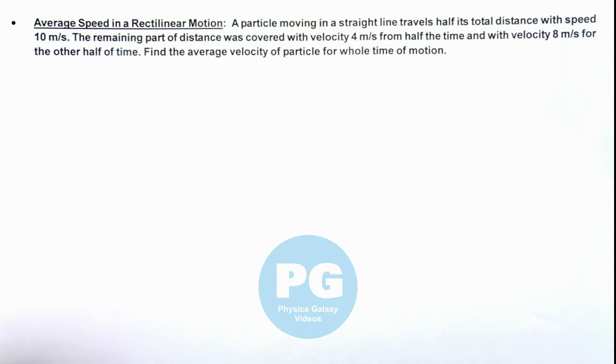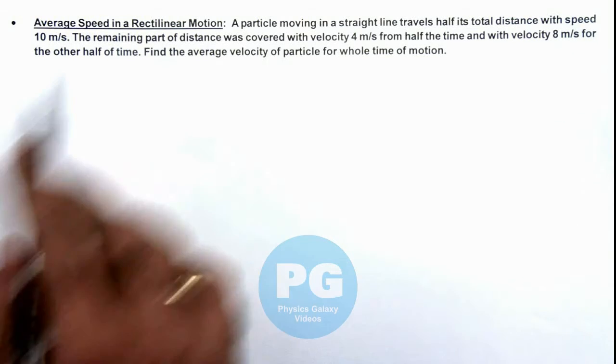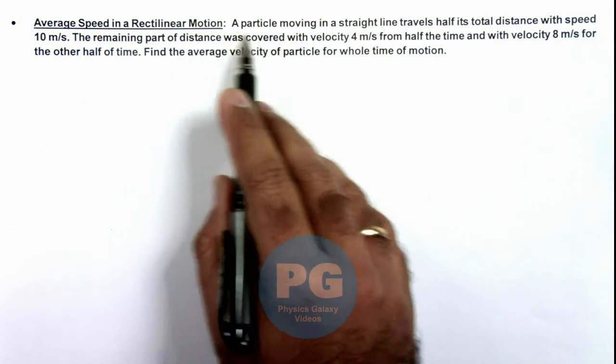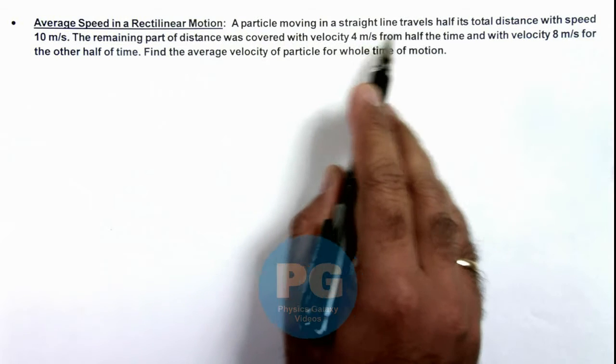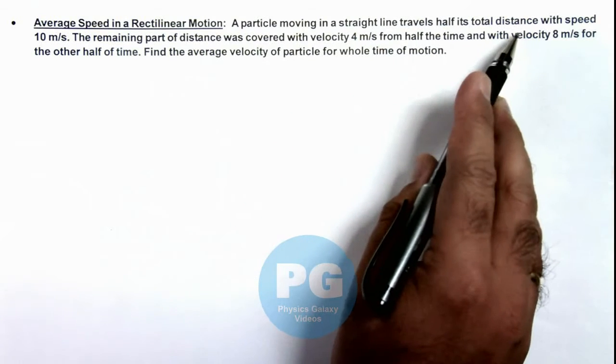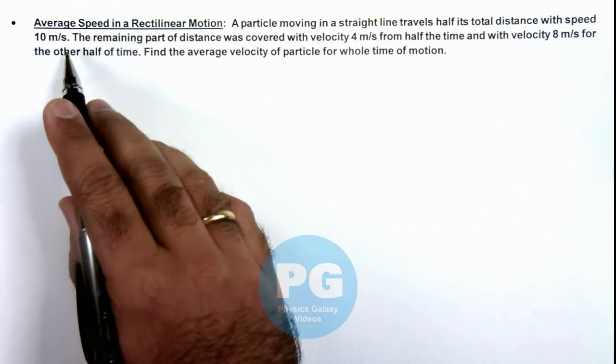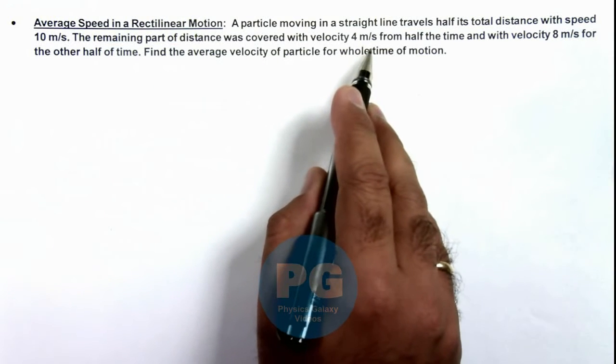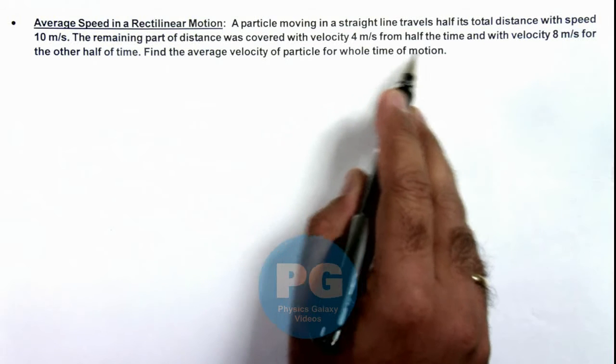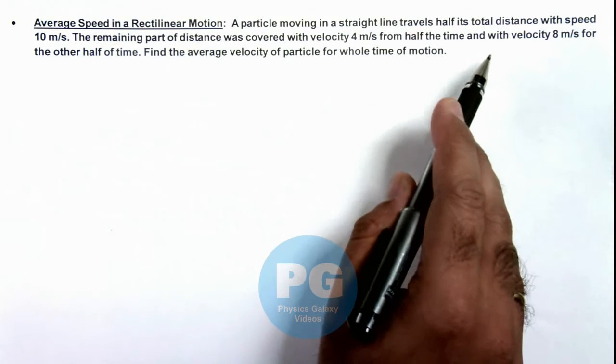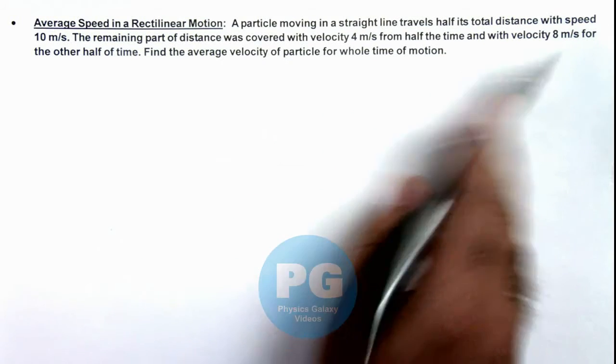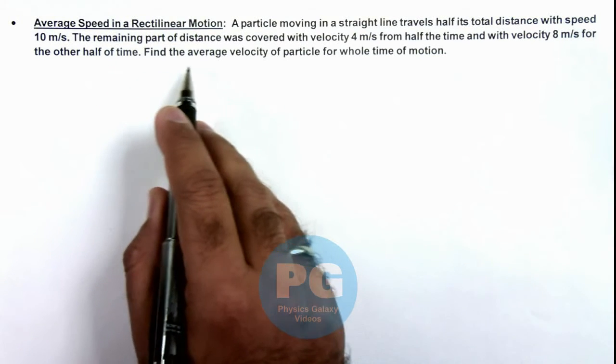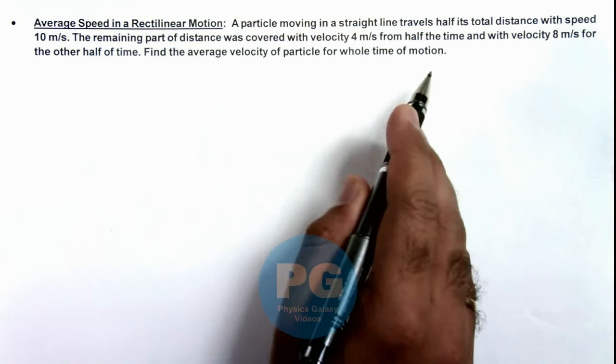This illustration describes average speed in rectilinear motion. Here we are given that a particle moving in a straight line travels half its total distance with speed 10 meters per second. The remaining part of distance was covered with velocity 4 meters per second for half the time, and with velocity 8 meters per second for the other half of time. We are required to find the average velocity of the particle for the whole time of motion.